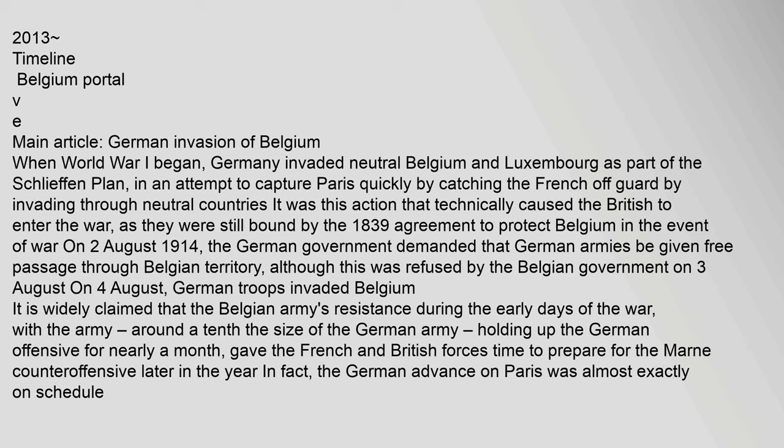When World War I began, Germany invaded neutral Belgium and Luxembourg as part of the Schlieffen Plan, in an attempt to capture Paris quickly by catching the French off guard by invading through neutral countries. It was this action that technically caused the British to enter the war, as they were still bound by the 1839 agreement to protect Belgium. On 2 August 1914, the German government demanded that German armies be given free passage through Belgian territory, although this was refused by the Belgian government on 3 August. On 4 August, German troops invaded Belgium. It is widely claimed that the Belgian army's resistance during the early days of the war, with the army around a tenth the size of the German army, holding up the German offensive for nearly a month, gave the French and British forces time to prepare for the Marne counteroffensive later in the year. In fact, the German advance on Paris was almost exactly on schedule.